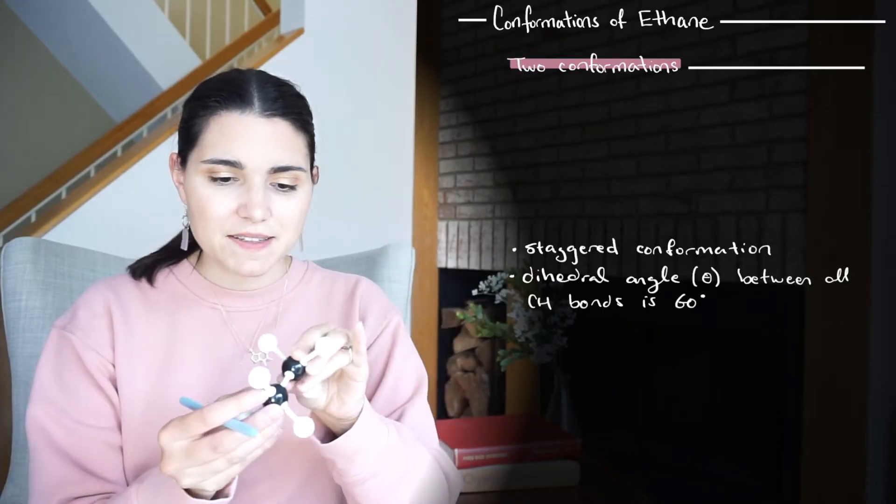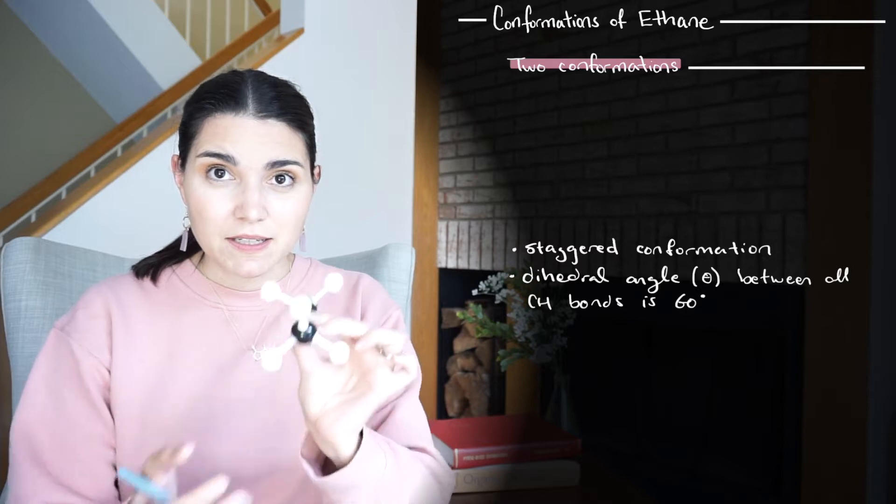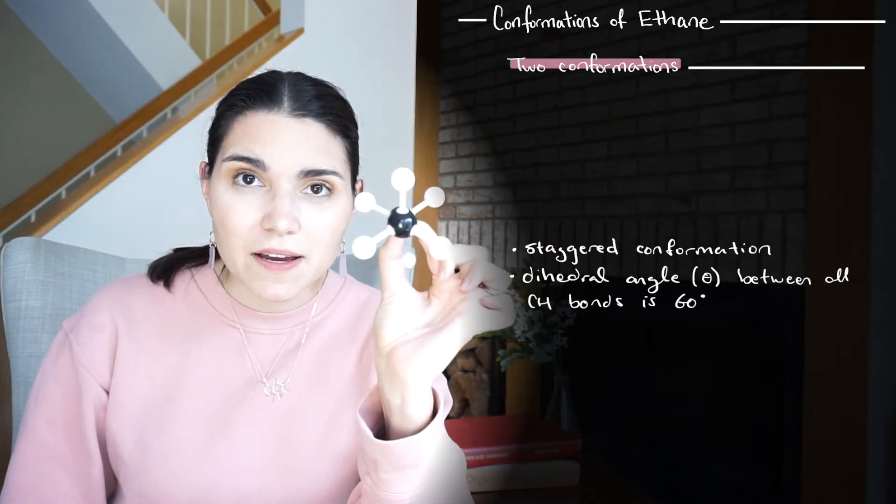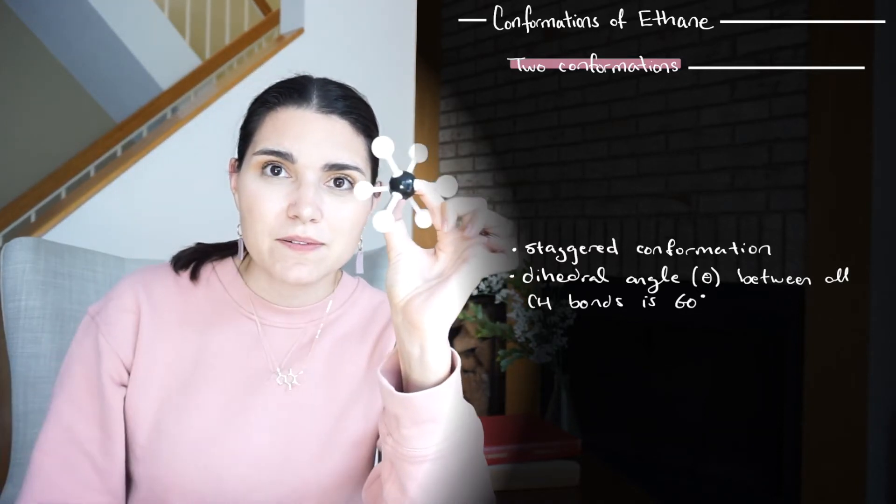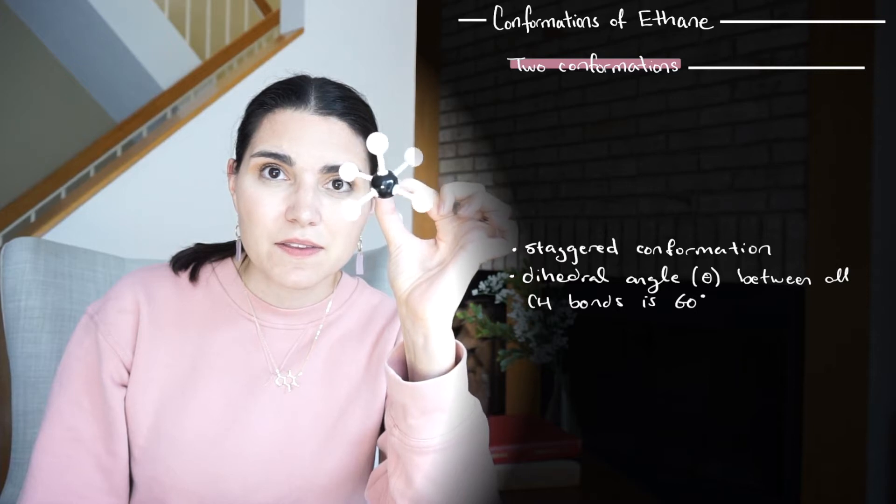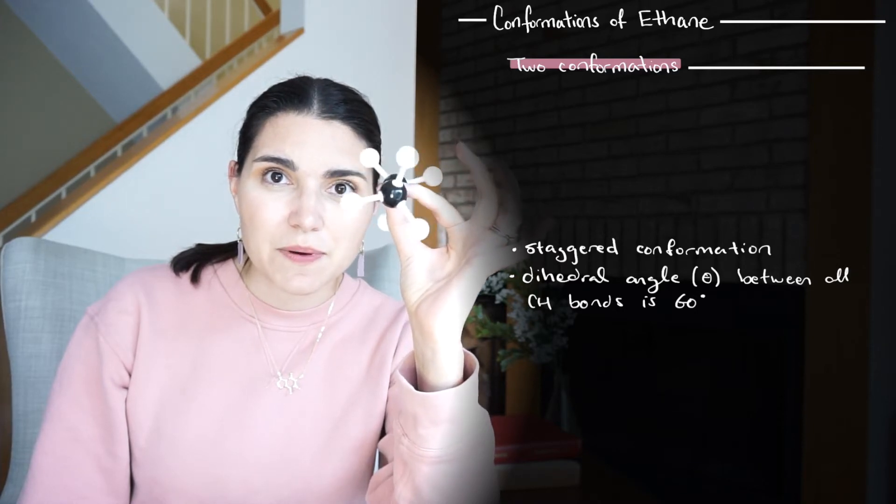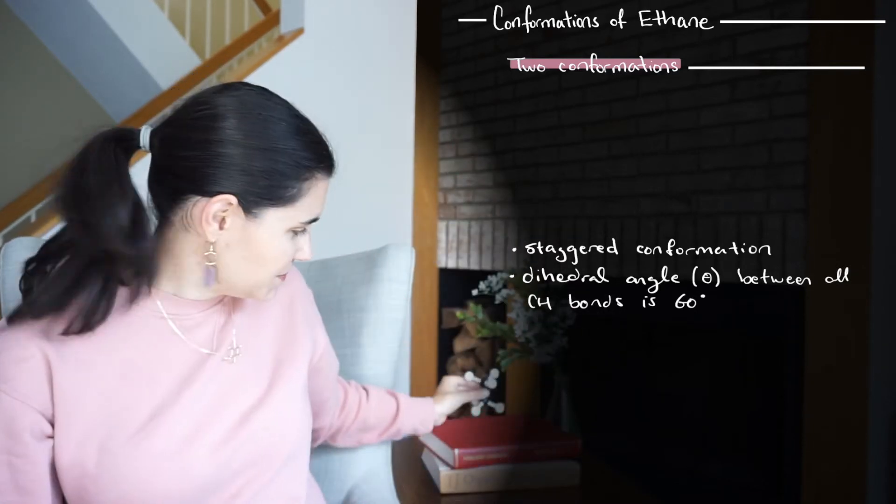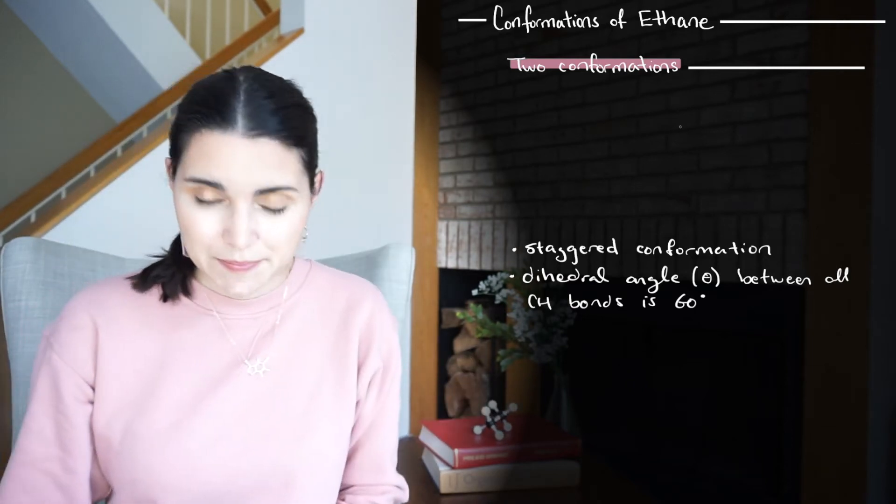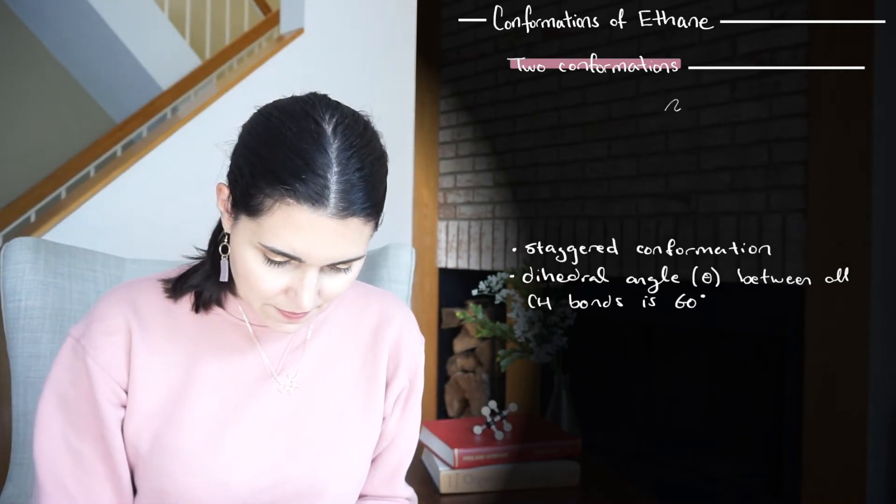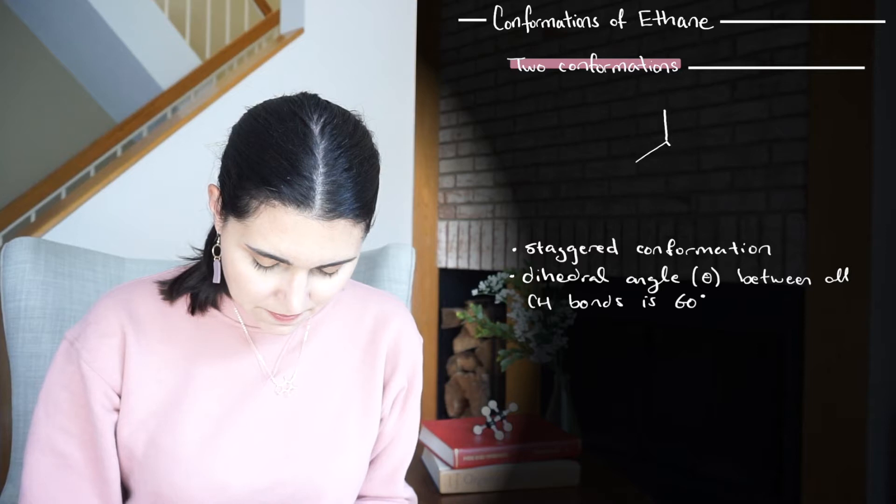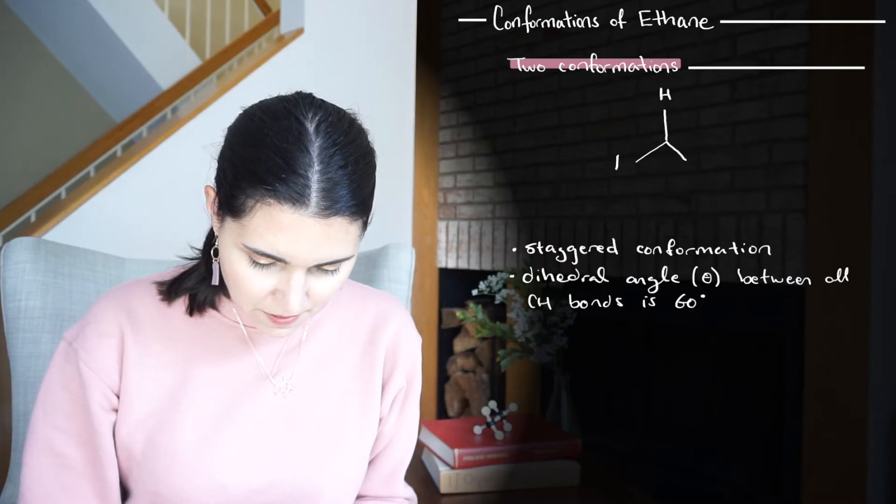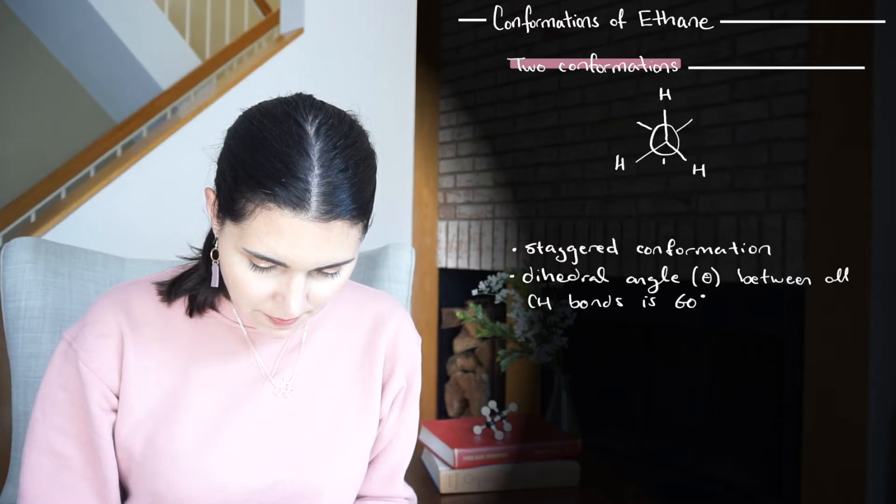The first is the staggered conformation. That's when all of the hydrogen atoms around the Newman projection, when you view it from this way, are perfectly spaced out. So I'm going to draw that. Here's our front carbon and our back carbon.